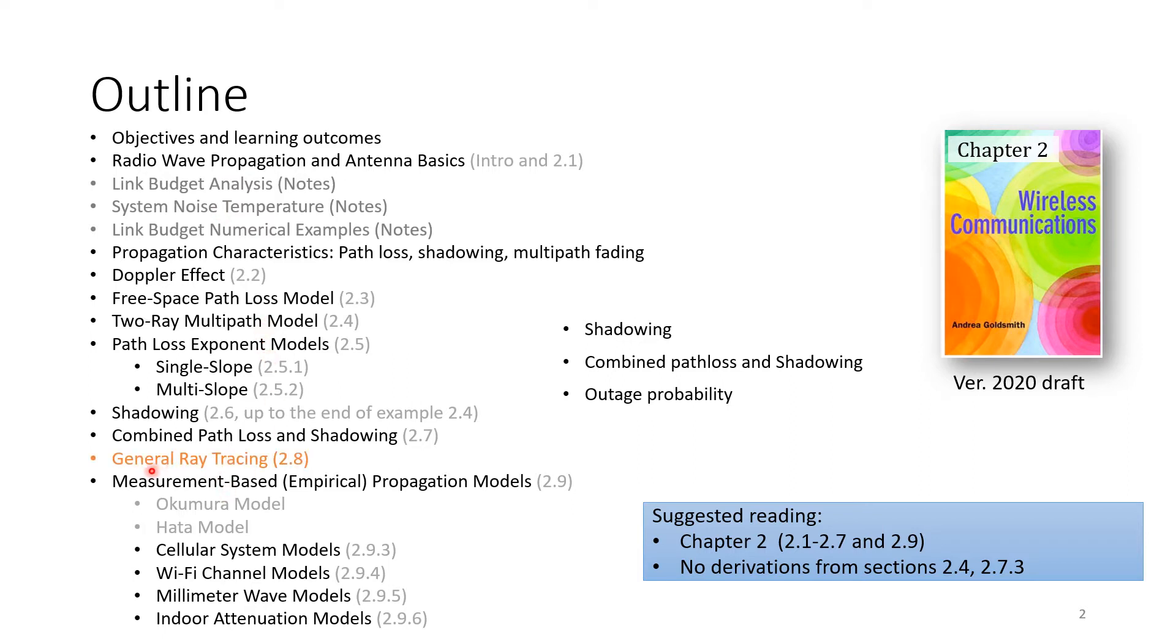Let me recall what we have done so far and where we are in our roadmap. We will now do general ray tracing and look at a quick review of measurement-based empirical propagation models including Okumura, Hata, cellular WiFi, millimeter wave, and attenuation models. This is more of a reading material.